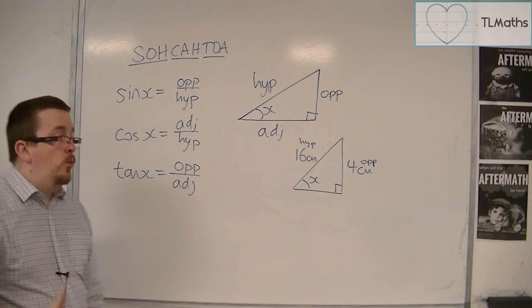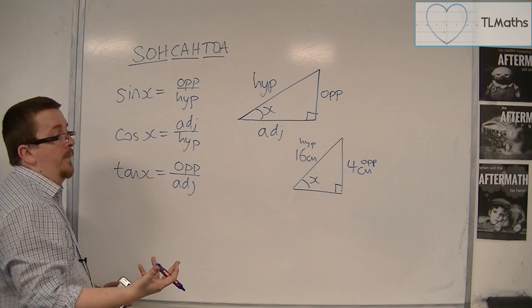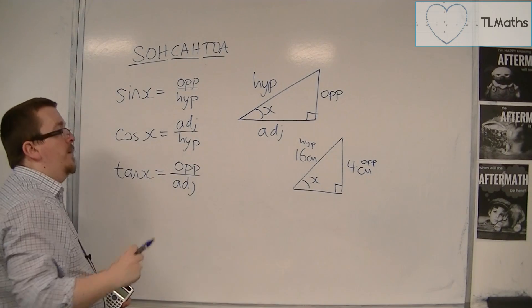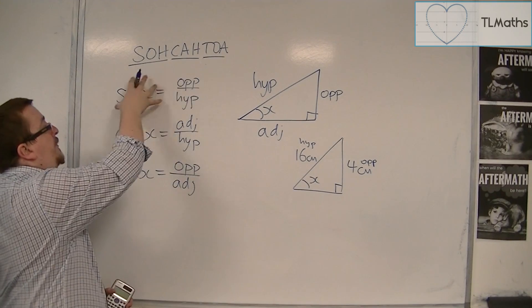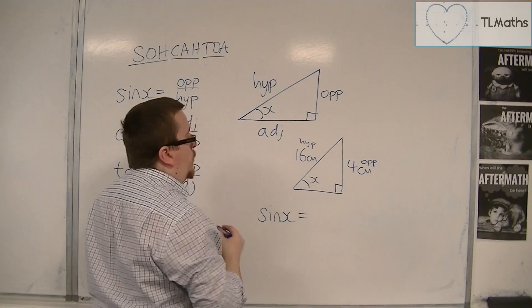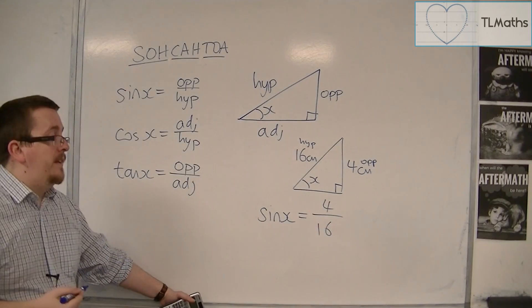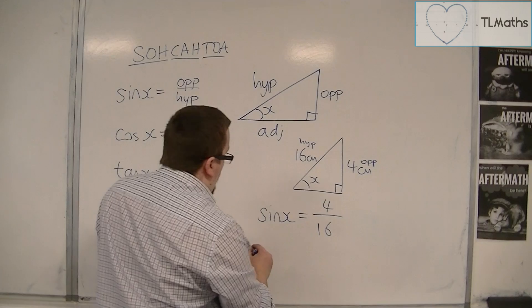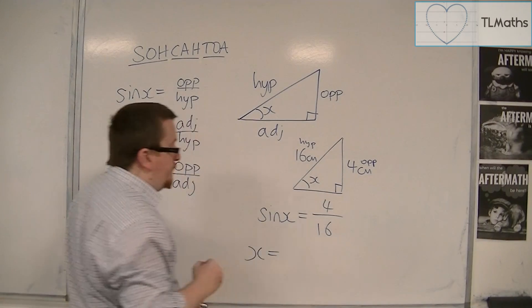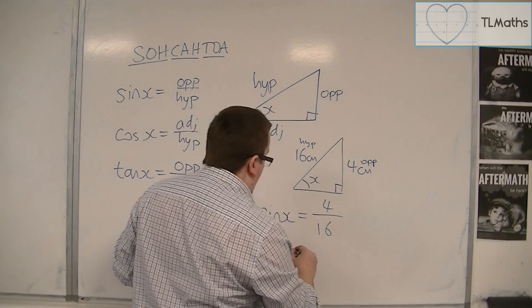I don't have the adjacent, so I wouldn't look for a formula that has the adjacent in it. I'll look for the one that has the opposite and hypotenuse in it, which is sine. So sine of x is equal to the opposite over the hypotenuse, so 4 over 16. Then in order to find the angle, we need to use the inverse sine of 4 over 16.